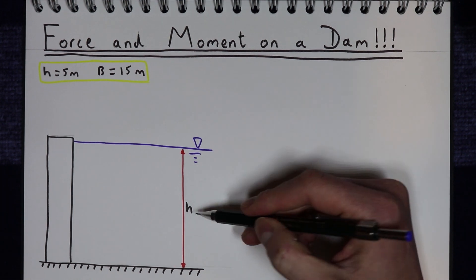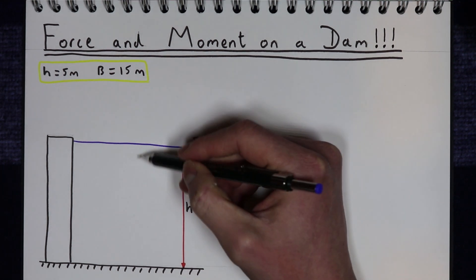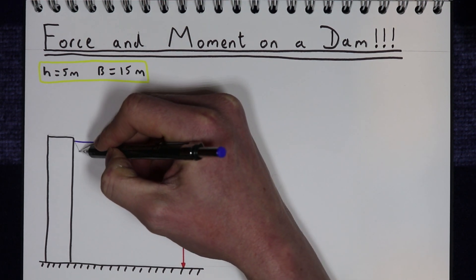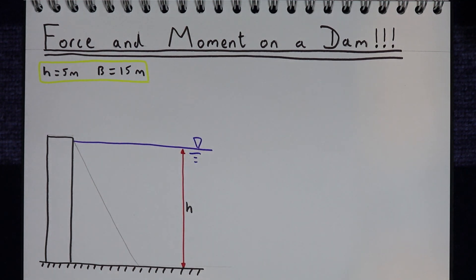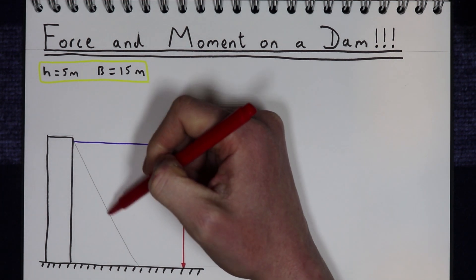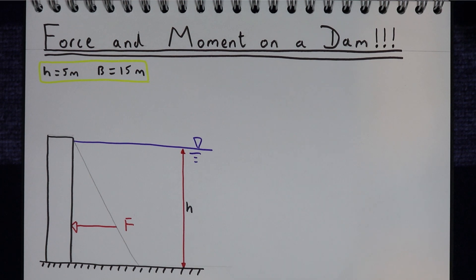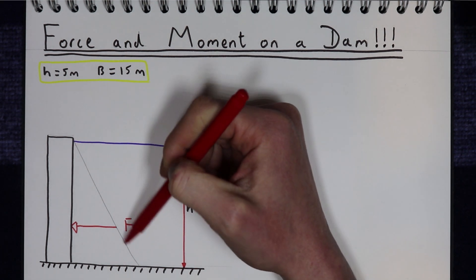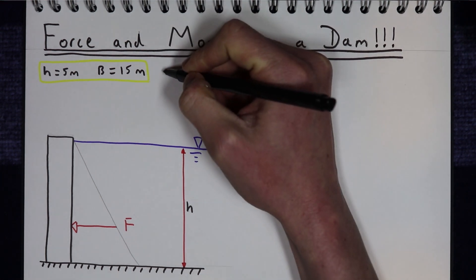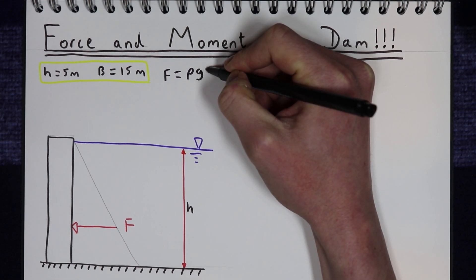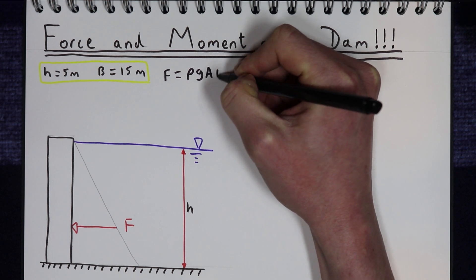We've got water to a certain height, h. As you go down through this water column, the pressure of the water, and therefore the force on the dam, is going to increase linearly with a triangular relationship. We can replace all of those forces with one single resultant force, F, representing the total force acting on the dam. That force is given by: F equals the density of water times gravity times the area of the dam times the centroid of the dam.